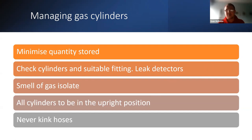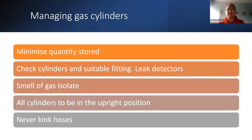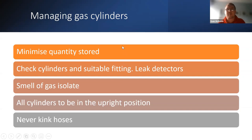Always keep gas cylinders in the correct upright position and never kink hoses. Acetylene has the largest flammable range of any gas — 2 to 92 percent — so it must be used in minimum amounts and in the correct way. When using multiple gases, you may need to compile a DSEAR (Dangerous Substances and Explosive Atmospheres Regulations) risk assessment to mitigate cross-flammability. When stored on site, ensure cylinders are in locked cages at a suitable distance from each other.